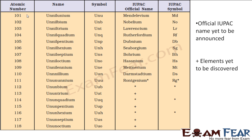Here are some examples from the table. Element 101 has the temporary IUPAC name unnilunium with symbol Unu; its officially recognized name is Mendelevium with IUPAC symbol Md. Elements marked with a star are those whose IUPAC official name has not yet been announced, and those marked with a plus are not yet discovered. For example, element 112 has the temporary name ununbium with symbol Uub, and its official name is not yet recognized.